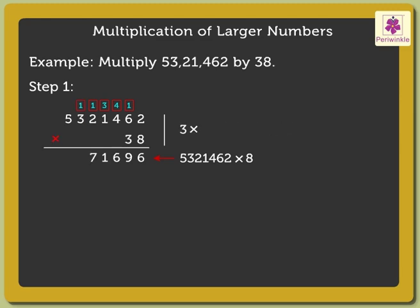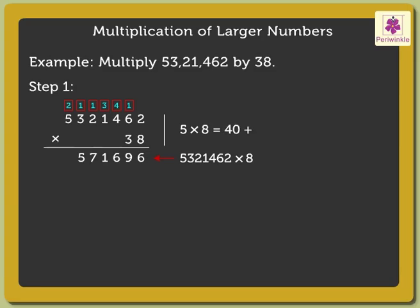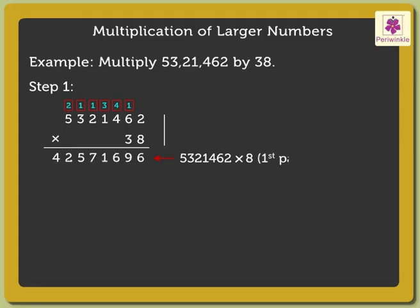3 into 8 is equal to 24, plus the carried over 1 is equal to 25. And lastly, 5 into 8 is equal to 40, plus the carried over 2 is equal to 42. We will call 4,25,71,696 as the first partial product.